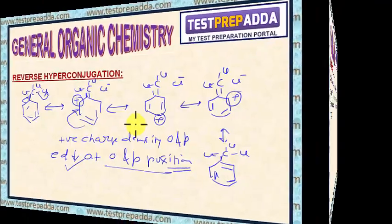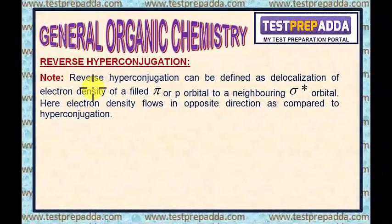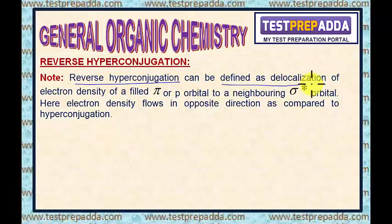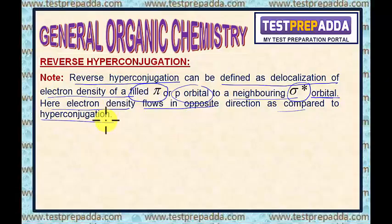Let me summarize this. Reverse hyperconjugation can be defined as delocalization of electron density of a filled pi or P orbital to a neighboring anti-bonding sigma orbital. Here, electron density flows in opposite direction as compared to hyperconjugation. That is why we call this as reverse or negative hyperconjugation.